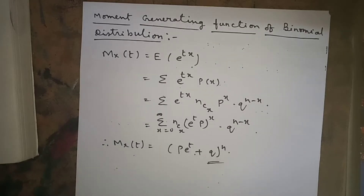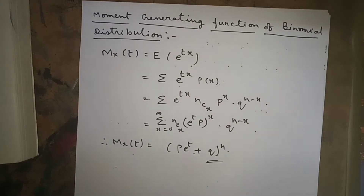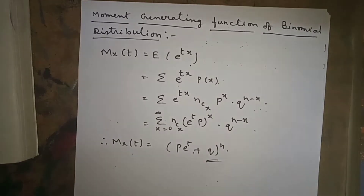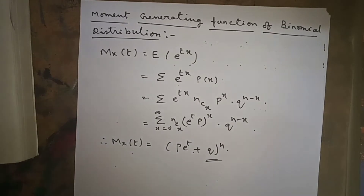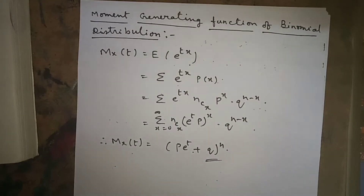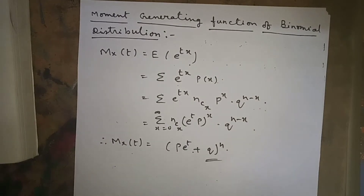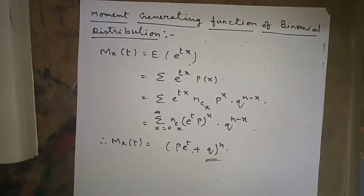Hello everyone, today I am going to explain a few binomial distribution problems. Before going to start, we will see the MGF — moment generating function — of binomial distribution. The formula of MGF is M_x(t) = E(e^(tx)).